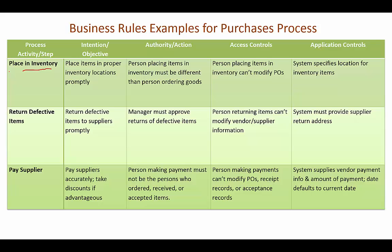After assessment, accepted items are placed in inventory in the proper location. Most warehouses have different locations assigned to different items. The person placing items into inventory must be different from the person who ordered the goods and cannot modify purchase orders. The system should specify the location for each inventory item, taking into account warehouse planning, item size and weight, so that warehouse bins are allocated appropriately.